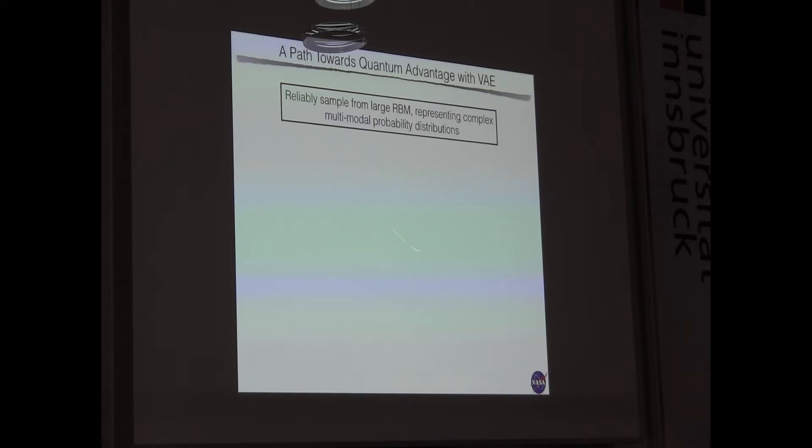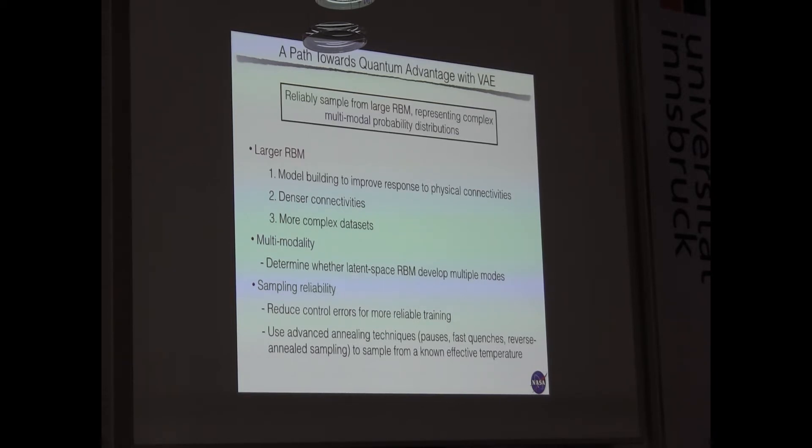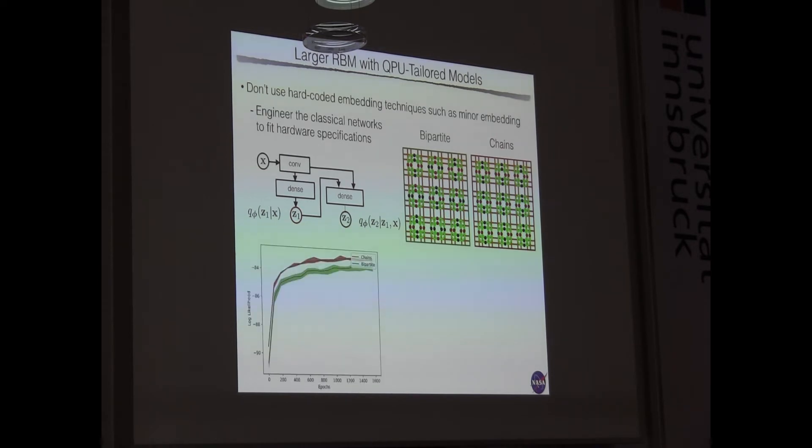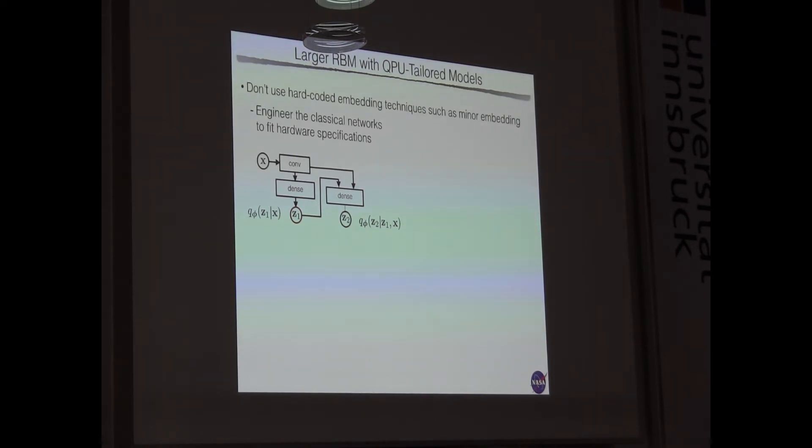But is there a path to quantum advantage in this setup? It's a highly non-trivial question, but somehow we can see a path if we can reliably sample from large RBMs and the RBMs develop multimodal probability distributions. So, I'm going to go through this quickly. One thing that we can do is to work with the classical encoders to more efficiently exploit a given hardware connectivity.